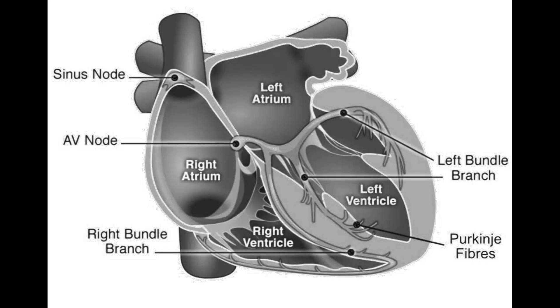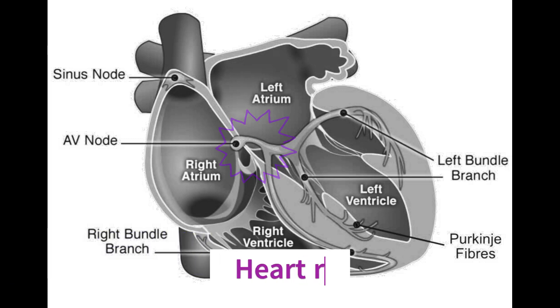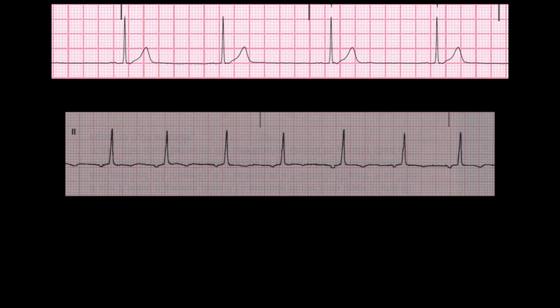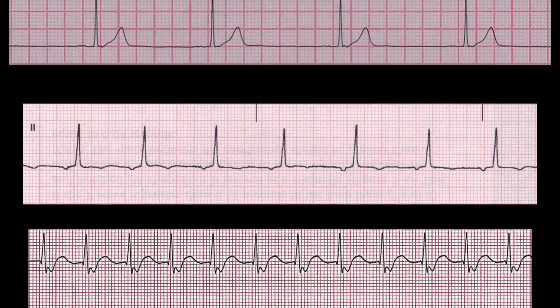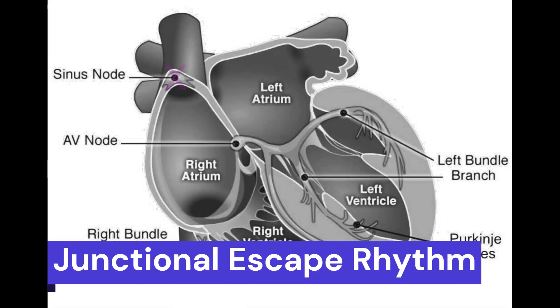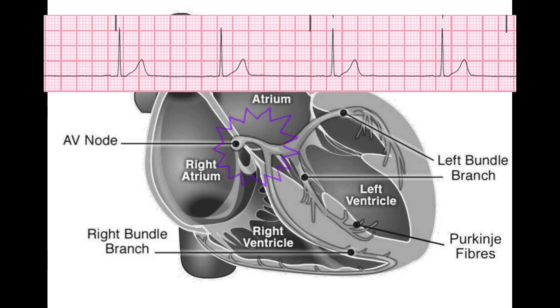In a junctional rhythm, the electrical impulses originate from the AV junction instead of the SA node, leading to a heart rate of 40 to 60 beats per minute. There are three types of junctional rhythms: junctional escape rhythm, accelerated junctional rhythm, and junctional tachycardia. A junctional escape rhythm occurs when the SA node fails to initiate an electrical impulse, and the AV junction takes over as the primary pacemaker of the heart.